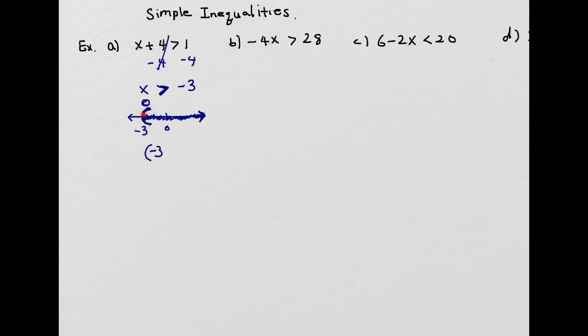So the interval notation is parenthesis on negative 3, all the way to positive infinity. Infinity always uses parentheses. That will be the graph and interval notation of that solution.